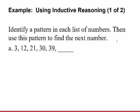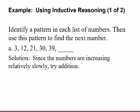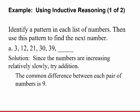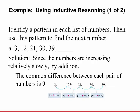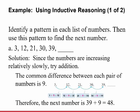Now let's do an inductive reasoning example with numbers. I want to identify a pattern in a list of numbers and use it to find the next number. First sequence: 3, 12, 21, 30, 39. Since the numbers are increasing relatively slowly, try addition. The common difference between each pair is 9 — to get from 3 to 12, add 9; from 12 to 21, add 9; and so on. Therefore, the next number is 39 plus 9, which equals 48.